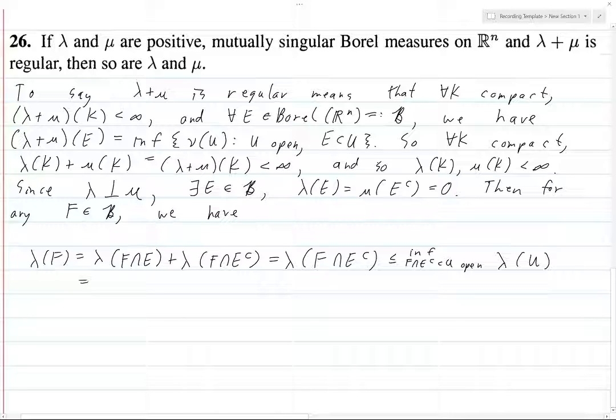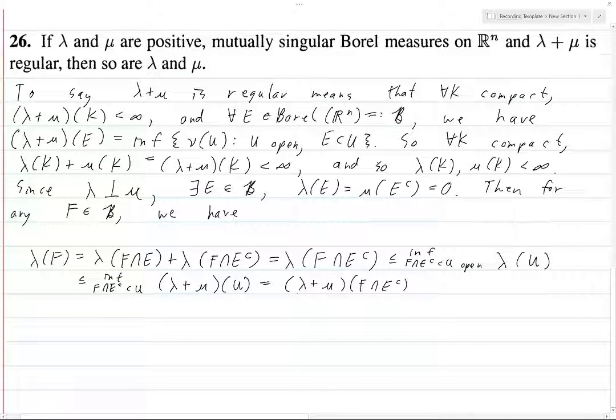The infimum over F ∩ E^c subset of U of λ + μ of U because we're just adding on more stuff to it potentially. But what's this? This is equal to (λ + μ) of F ∩ E^c, and that's because λ + μ is outer regular.